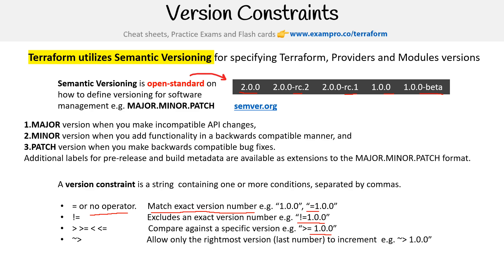Then we have the tilde operator, which allows only the rightmost version component — the last number — to increment. So what this means is that only the last number here is allowed to increment.